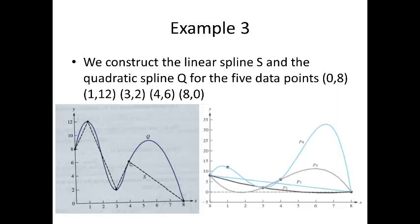So, here we construct the linear spline s and the quadratic spline q for the five data points (0,8), (1,12), (3,2), (4,6), (8,0). Now, if this looks familiar, it's because we did this one actually back in section 4.2. The graph on the left hand side of this slide shows the first and second degree spline functions, while the graph on the right shows the interpolating polynomial functions from chapter 4. Notice that the spline functions actually give us a better fit for the type of curve we're desiring. The other thing to notice is that the scan is taken from the author slides. I find it interesting that they had to scan their own textbook in order to get that.